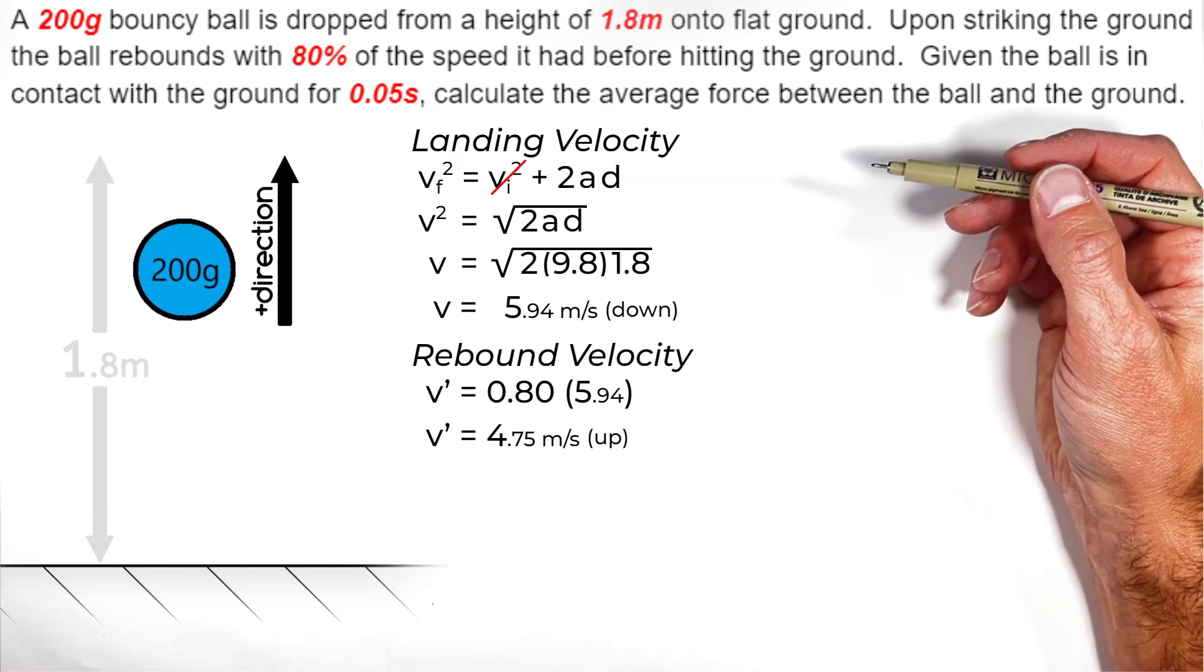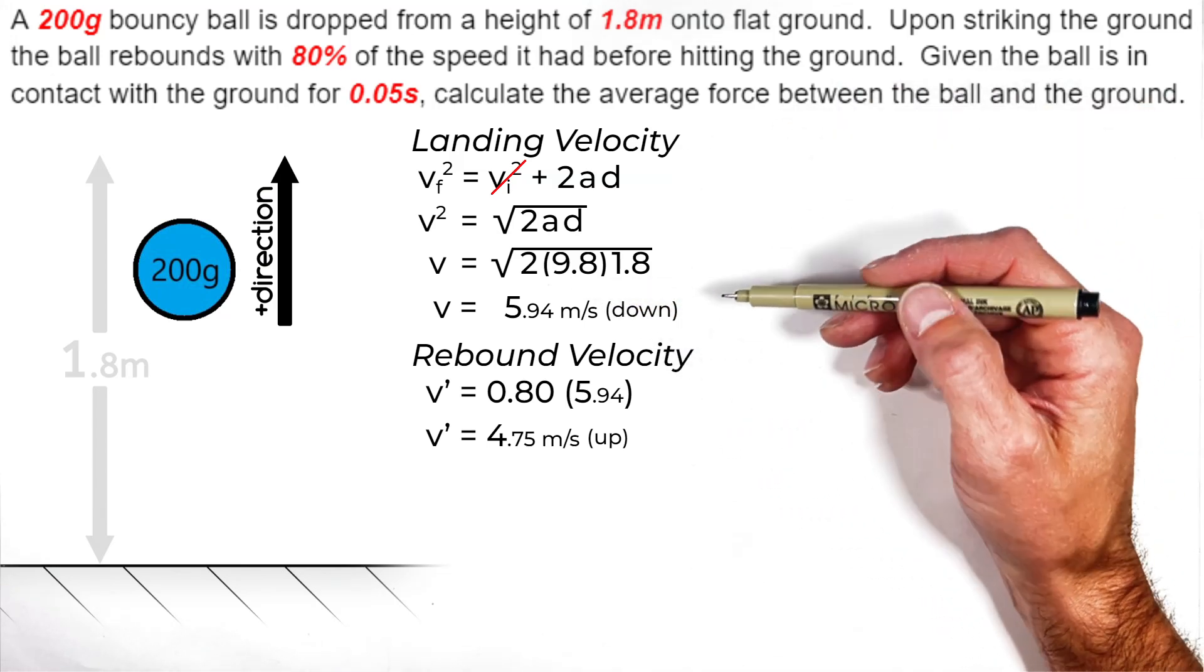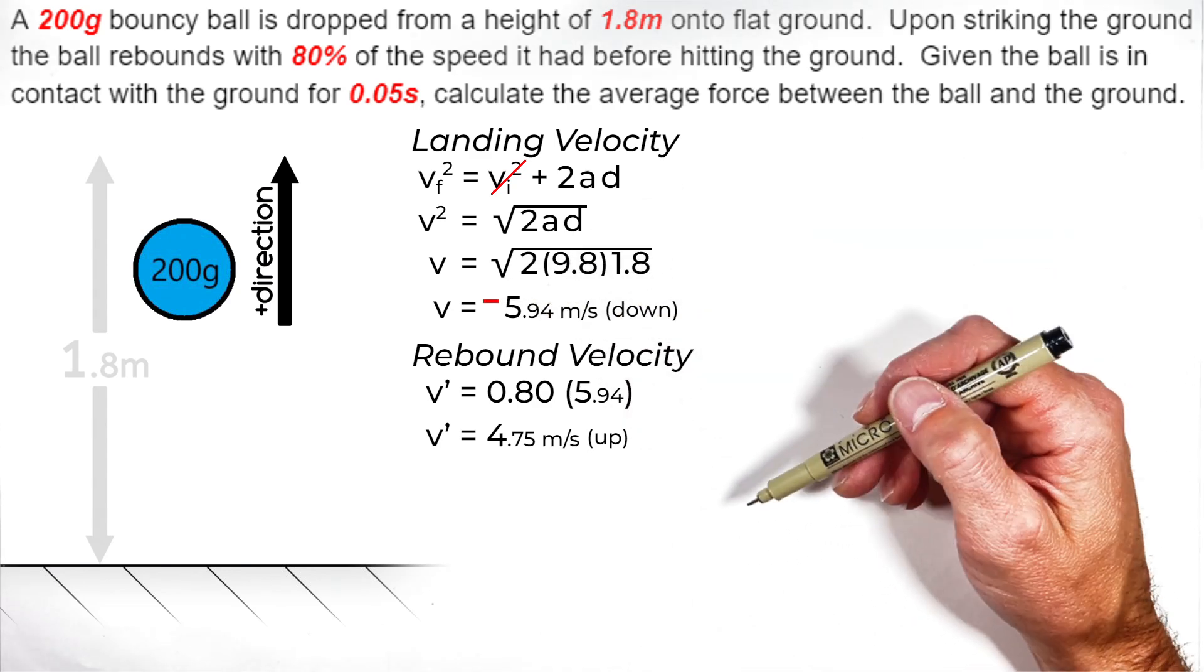If we say that up is the positive direction, really what that means is this velocity of the ball just before it hit the ground was negative. A lot of times I see people leave out that negative, and they get this problem wrong.